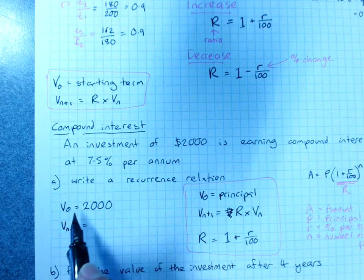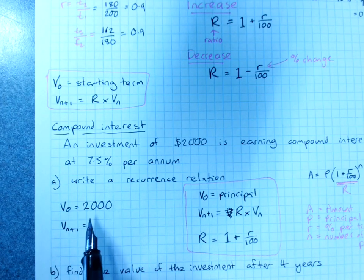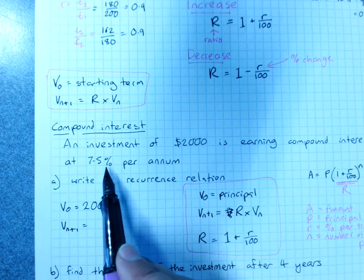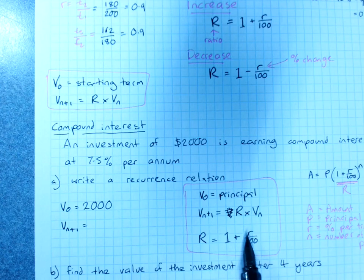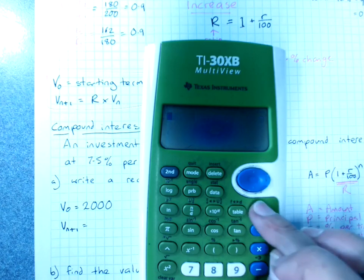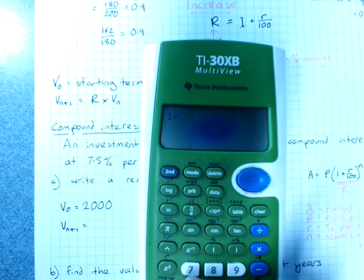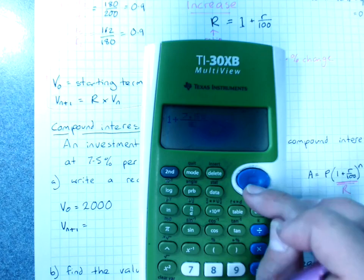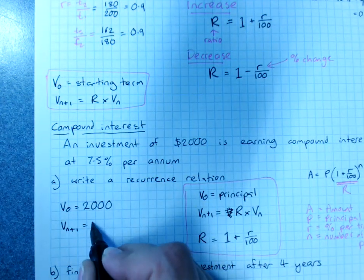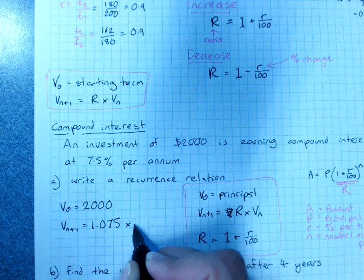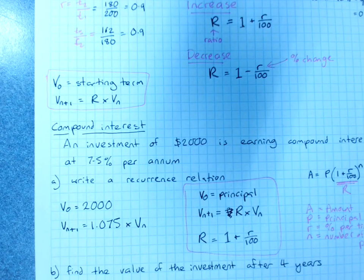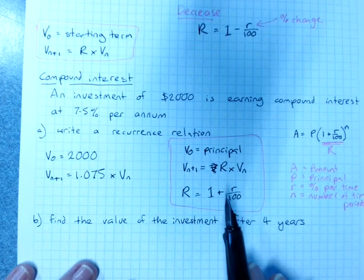Vn+1 is our common ratio. Now 7.5% per annum. This will be 1 plus 7.5 over 100. Use your calculator. 1 plus, use a fraction if you want, 7.5 over 100, 1.075 times Vn. That's it. That's our recurrence relationship for compound interest using the basic knowledge that we have.